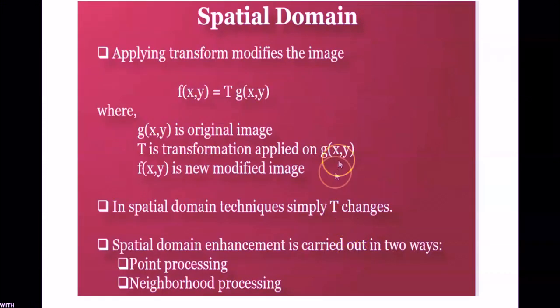And here we apply the transformation. Transformation is T here. So G is the original image. T is a transformation which we are applying on the original image to get a modified image or output image F. So this F is an enhanced image for us. T is a transformation applied on it.